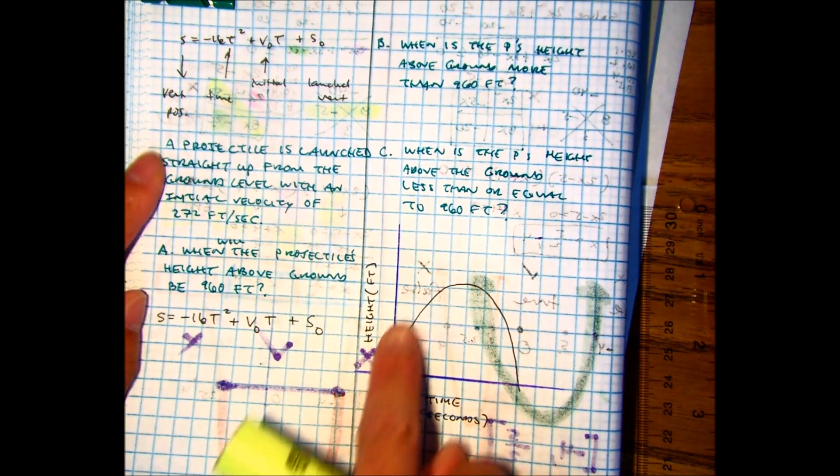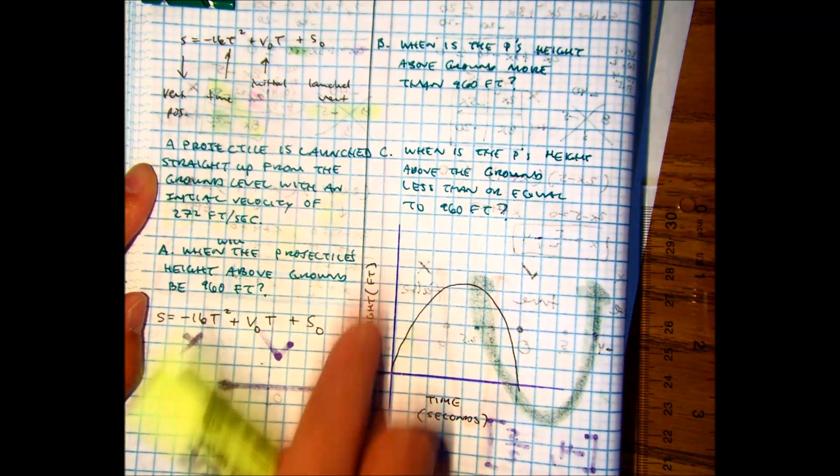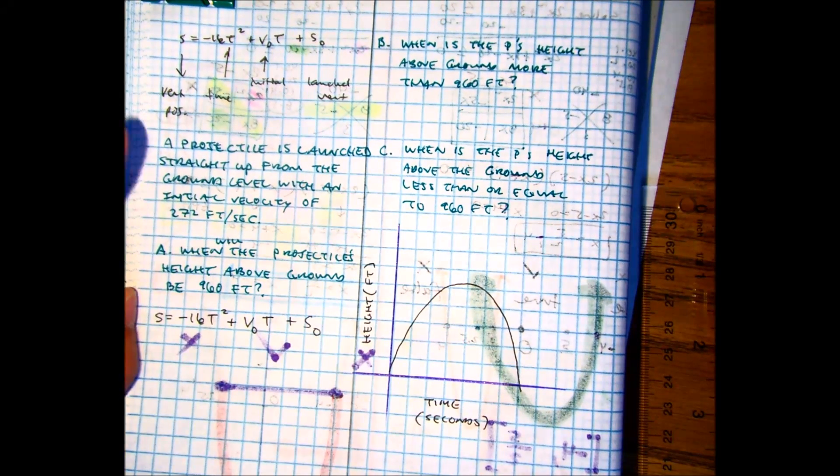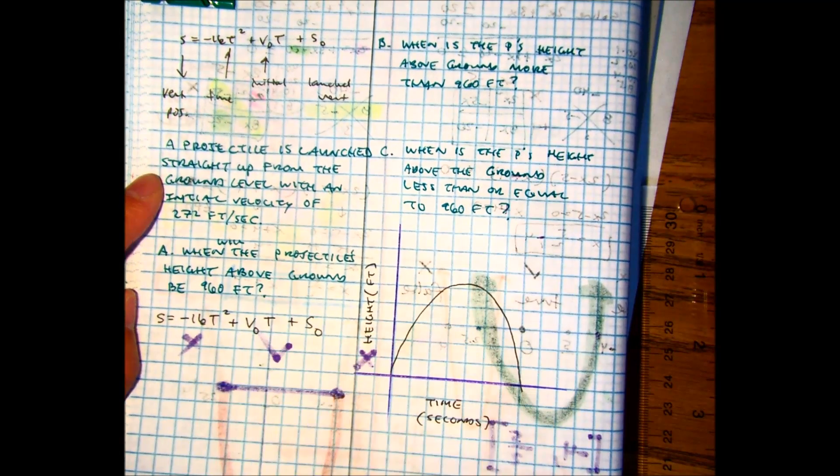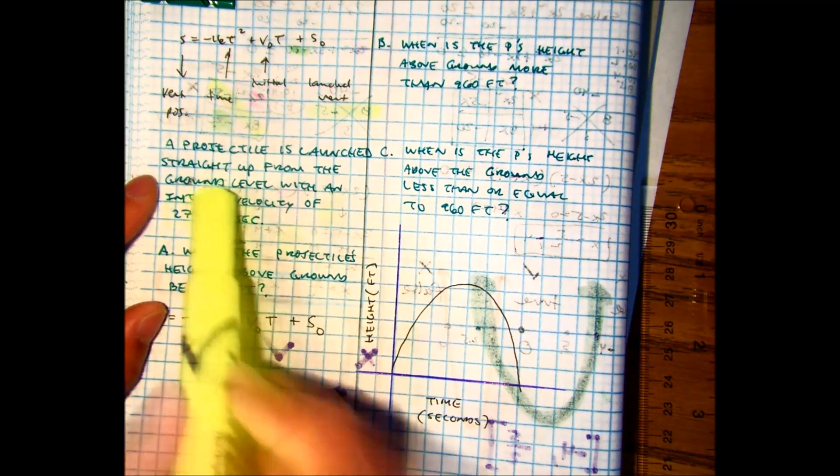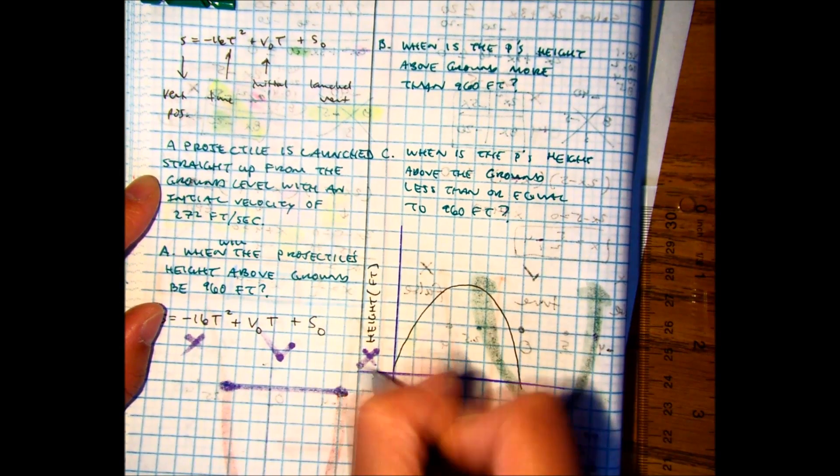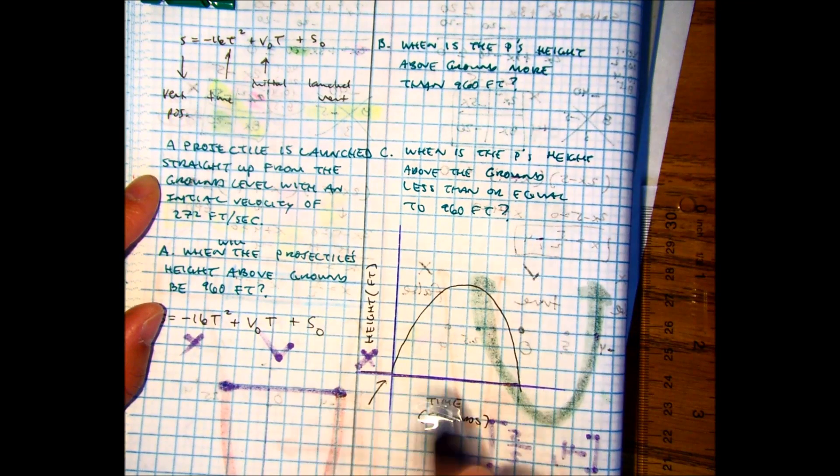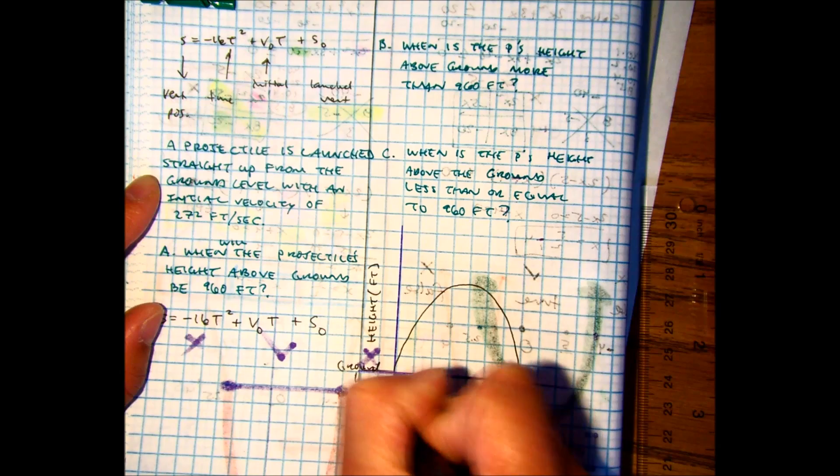A projectile is launched straight up. Don't think straight up like you're so mad you just throw it straight up in the air. It's just going to fall back on your head. Think like you're chucking it from ground level. This is ground level. You want to write that. The X axis is ground level.